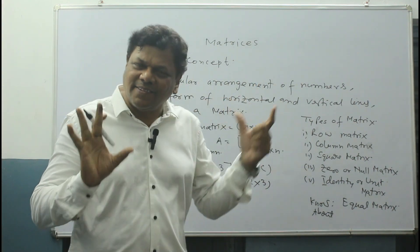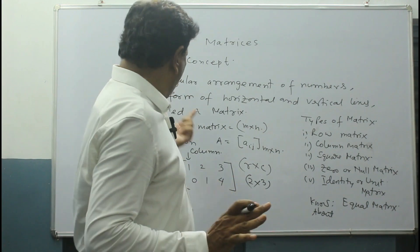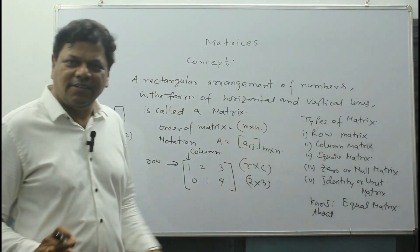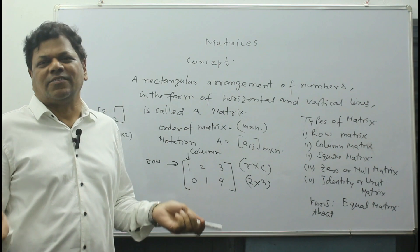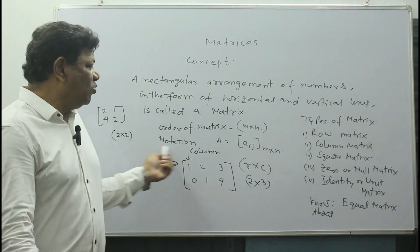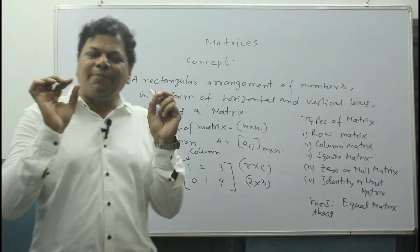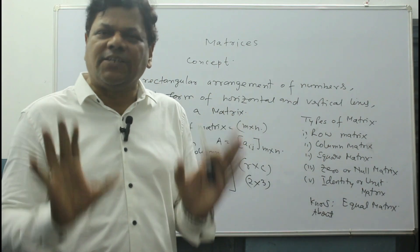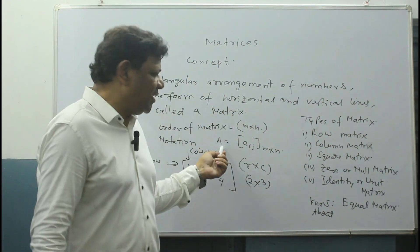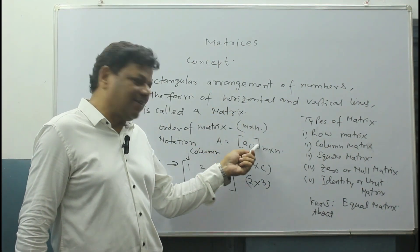So I think what a matrix is, is clear? What the order of a matrix is, is clear? You can write MN also, you can write RC. Not a problem. Notation: generally a matrix is denoted by capital letters. So I wrote capital A for the matrix, and this is the matrix.